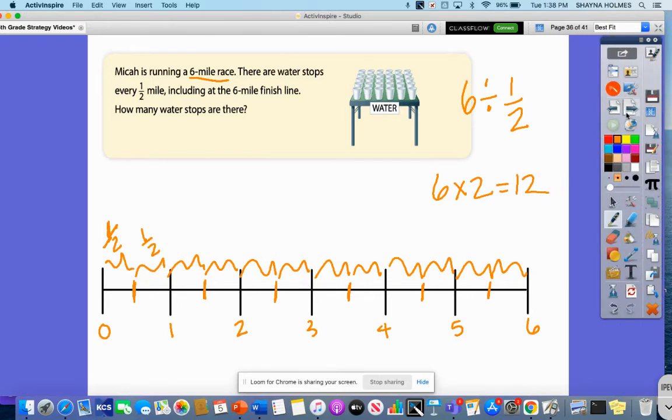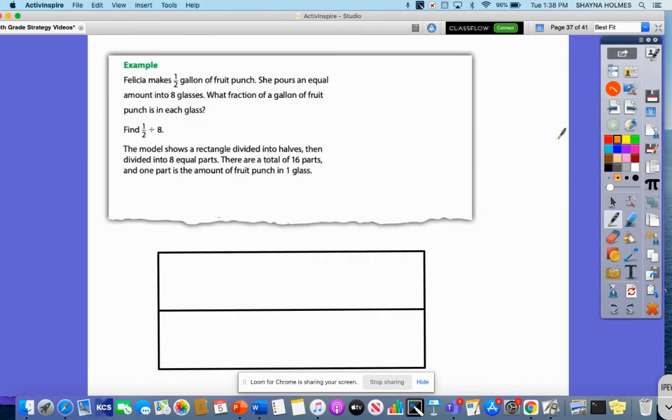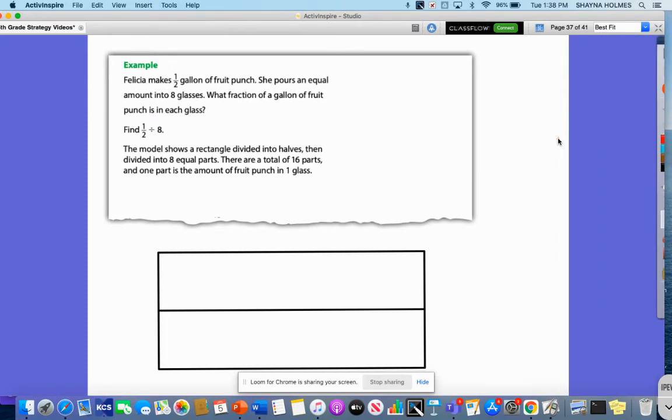Let's look at another problem. Okay, so this example says Felicia makes one half gallon of fruit punch. She pours an equal amount into eight glasses. What fraction of a gallon of fruit punch is in each glass?